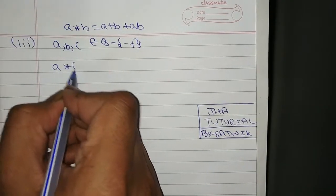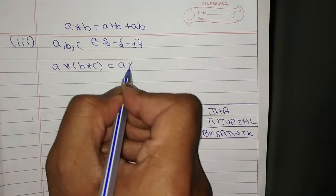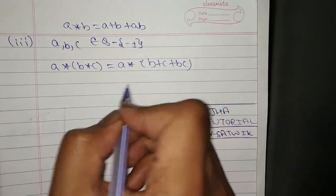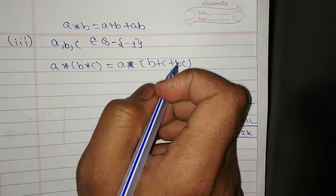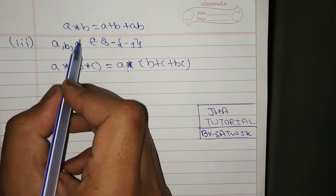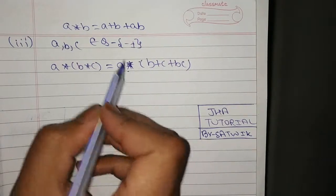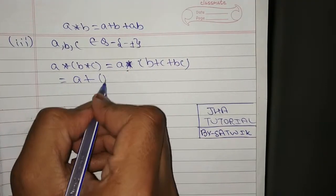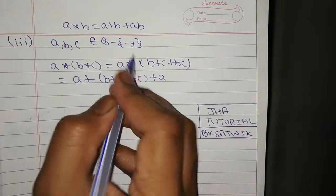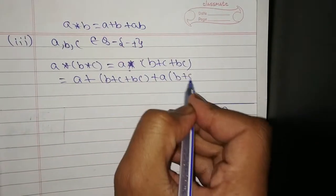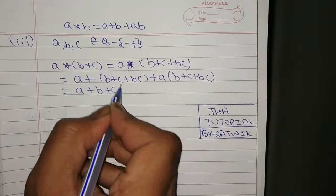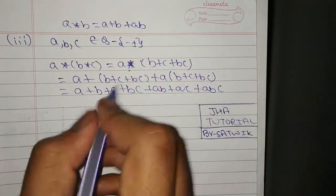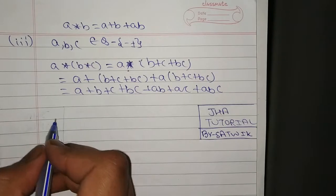So (a★b)★c = (a+b+ab) + c + (a+b+ab)·c = a + b + ab + c + ac + bc + abc.